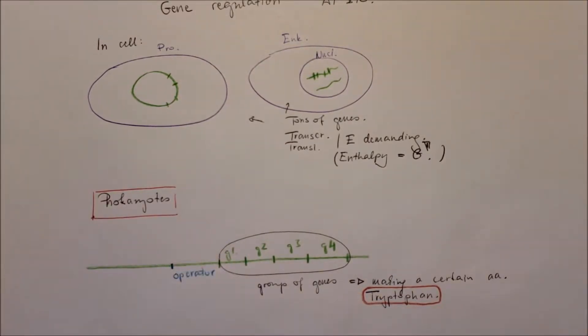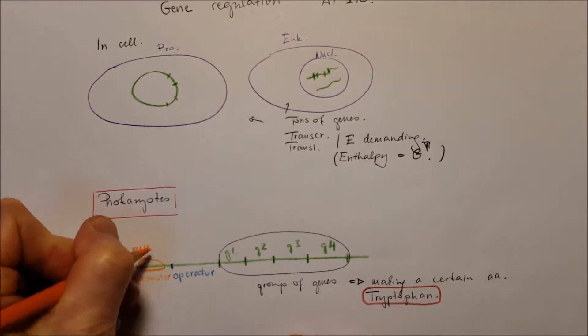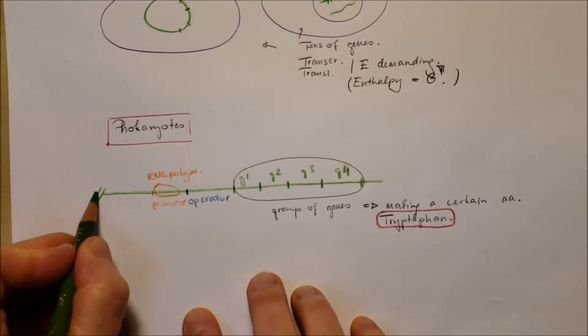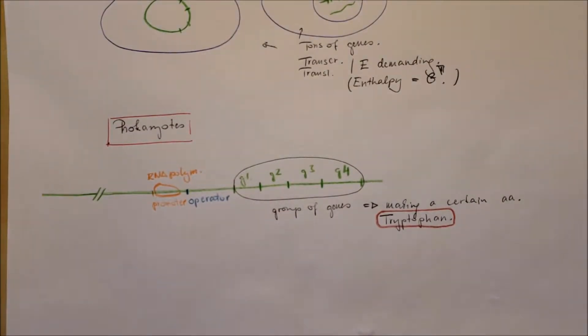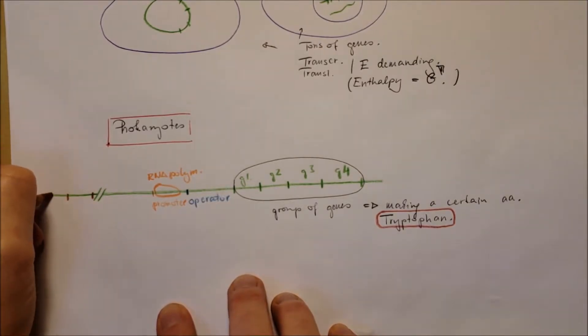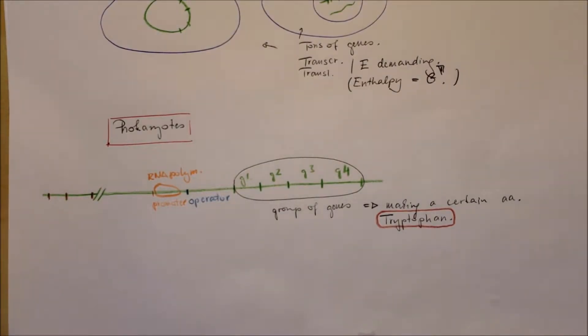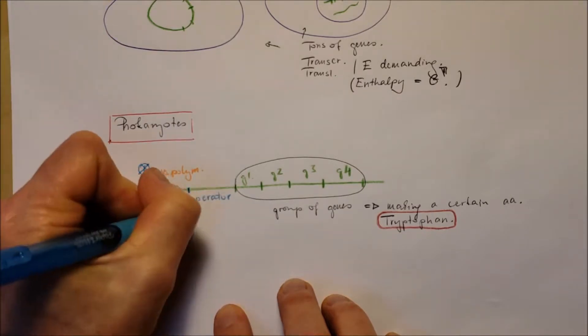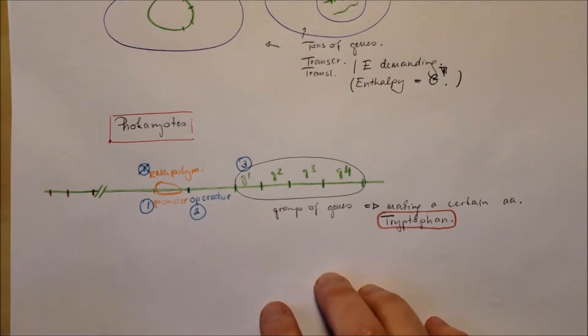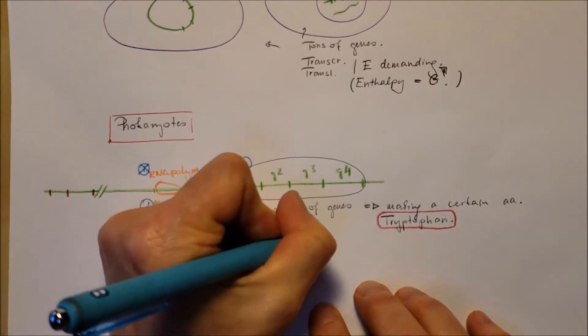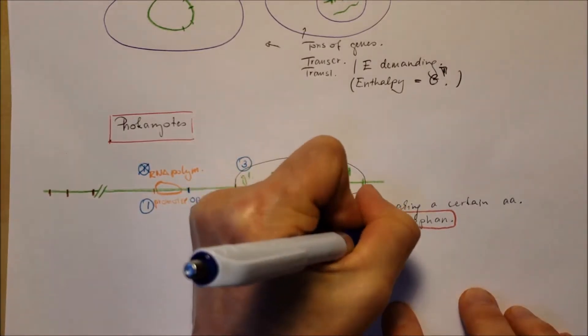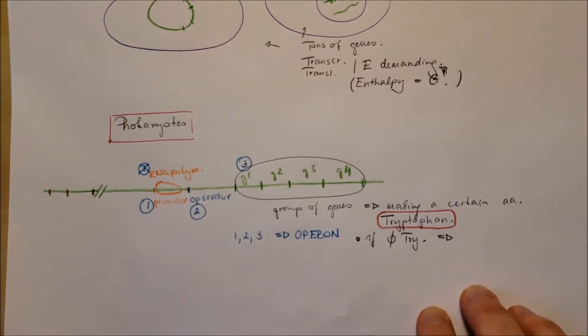Before the genes, there's an operator section and before that it's the promoter. Promoter is the place where the RNA polymerase will bind and will do the transcription of the DNA to form messenger RNA. Before that, further in front of the gene, there will be a section we'll get back to it a little bit later. The promoter, the operator and the group of genes make all three of them together the operon.